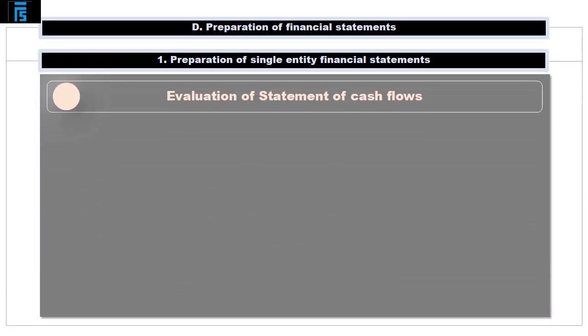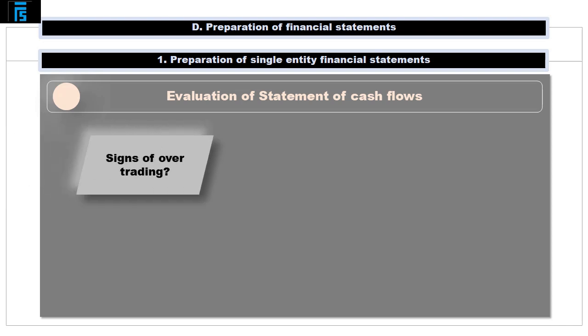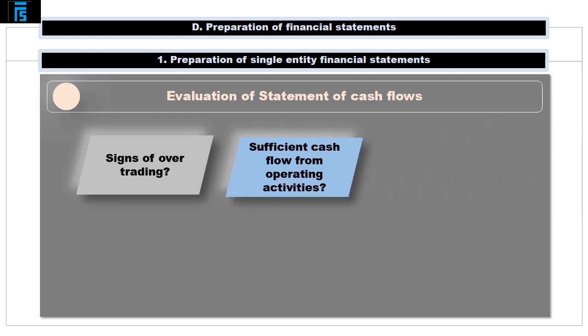To finish this module off, let's inspect some of the questions which ought to be asked when evaluating a company's statement of cash flows. Are there signs of over-trading? — a worrying condition exemplified by a combination of high earnings but low cash flows from operating activities and significant increases in inventories, receivables and payables. Is cash from operating activities sufficient to sustain interest and dividend payments?